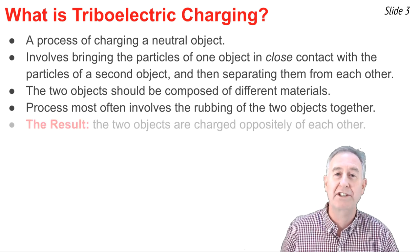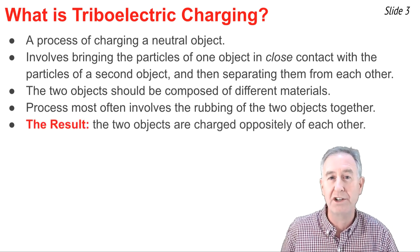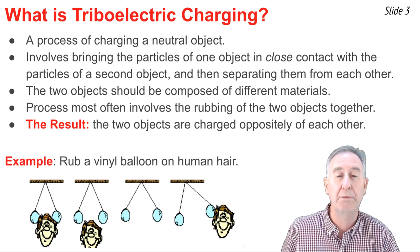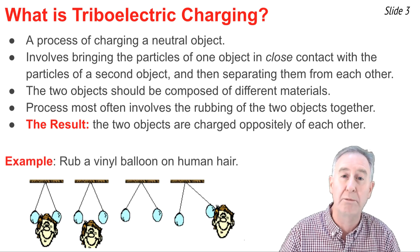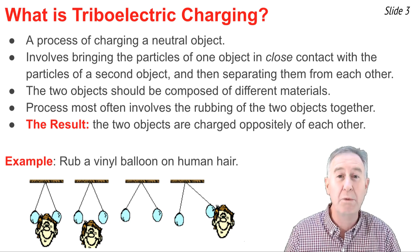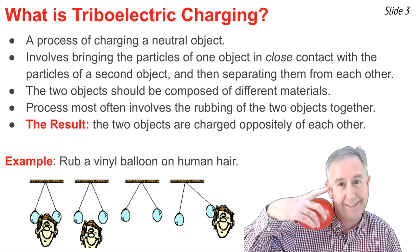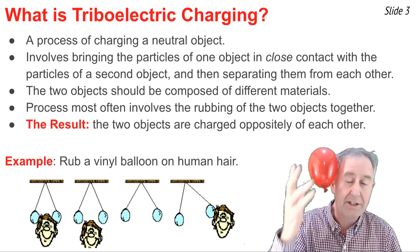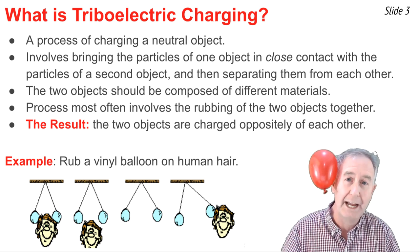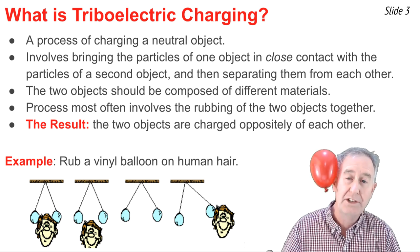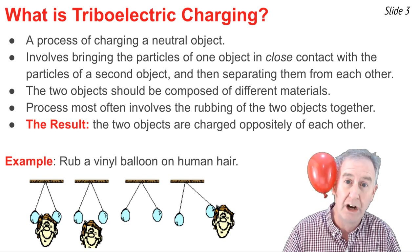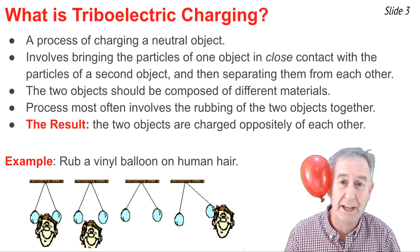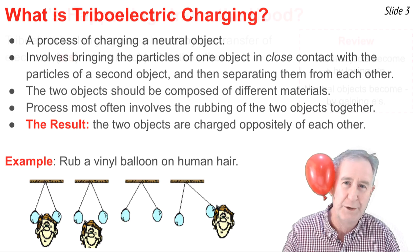The result of the process is that both objects become charged, and charged with an opposite type of charge. An example of this would be if you took a vinyl balloon and rubbed it on a human ear — something like this. This rubbing process gets the particles in close contact with each other, such that the two objects can be charged triboelectrically. One object becomes positive, the other negative, and the result is that they attract.